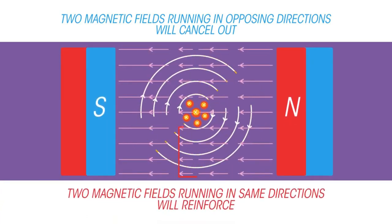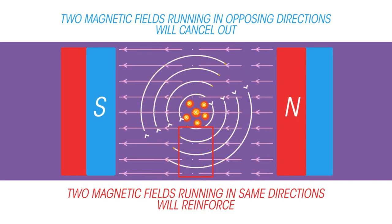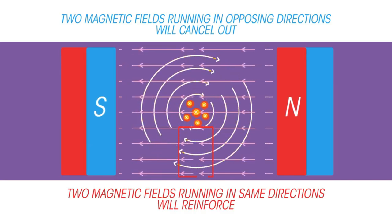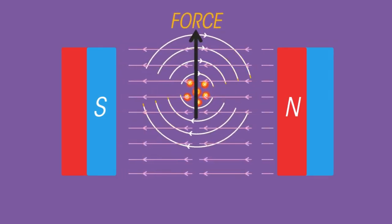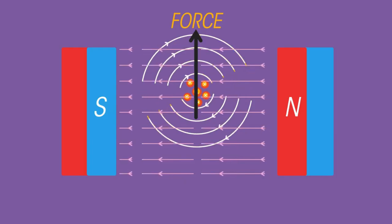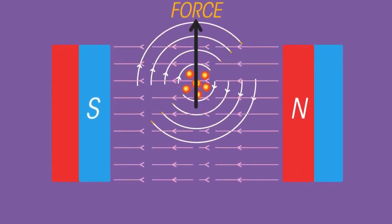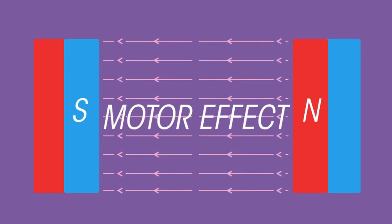Below the wire, the fields run in the same direction and reinforce each other. The wire is pushed away from the strong field towards the weak one, so the wire will be pushed vertically upwards out of the magnetic field. This is the motor effect.